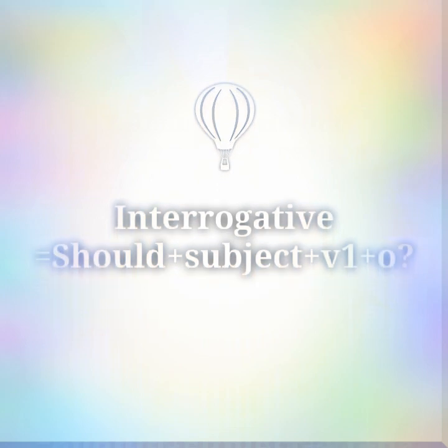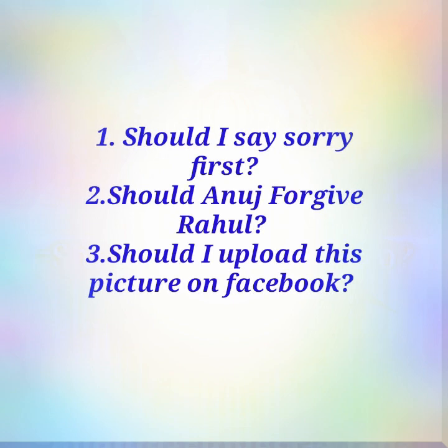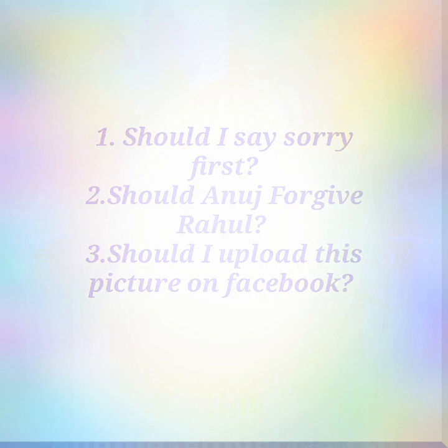Now let's move on to interrogative sentences. For creating an interrogative sentence, first put 'should', then the subject, then the first form of the verb, then the object, and then a question mark. Example 1: 'Should I say sorry first?' Example 2: 'Should Anuj forgive Rahul?' Example 3: 'Should I upload this picture on Facebook?'